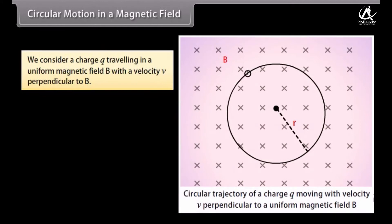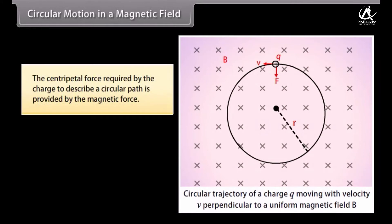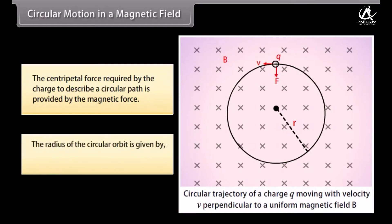Circular motion in a magnetic field: We consider a charge Q travelling in a uniform magnetic field B with a velocity V perpendicular to B. As the magnetic force always acts perpendicular to V, the velocity of the charge changes only in direction but the speed V remains constant inside the field. The force, having a constant magnitude and always directed at right angles to V, gives rise to uniform circular motion of the charge. The centripetal force required is provided by the magnetic force, and the radius of the circular orbit is given by r = MV / QB.